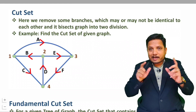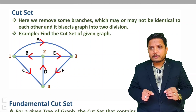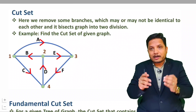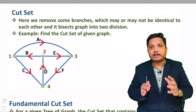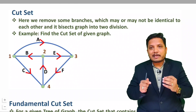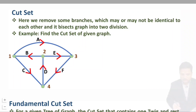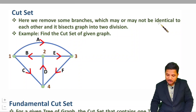Whenever any graph is given to you, if you remove some branches from that graph, there may be a bisection of the graph into two parts. So cut set is the removal of some branches from the graph to bisect it into two parts. These two parts may not be equal or identical, but you just need to bisect the graph into two parts, for which you remove some branches.